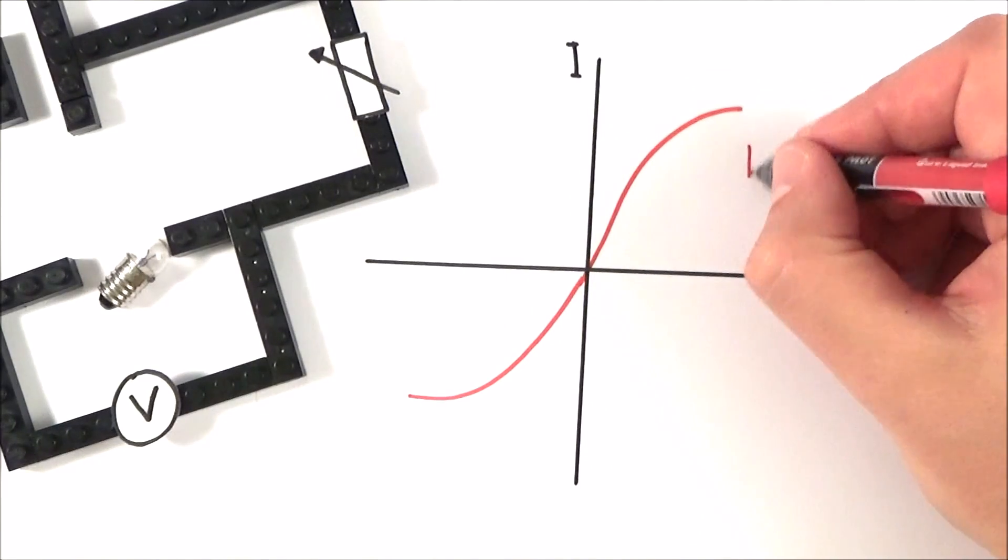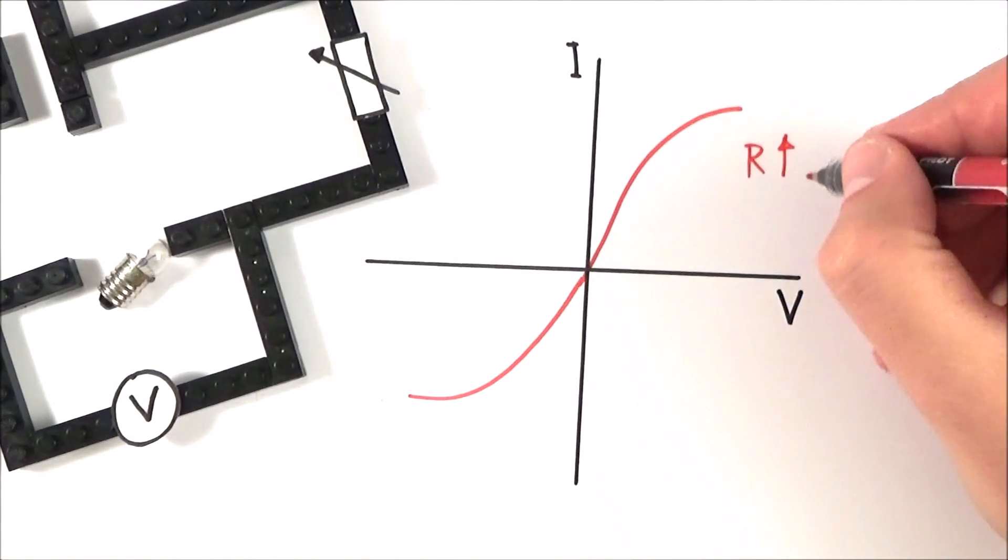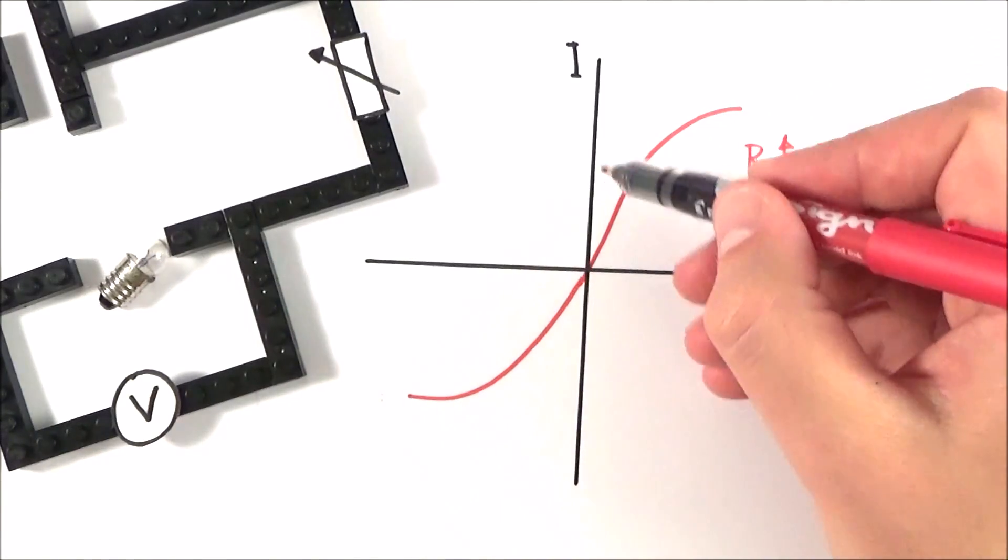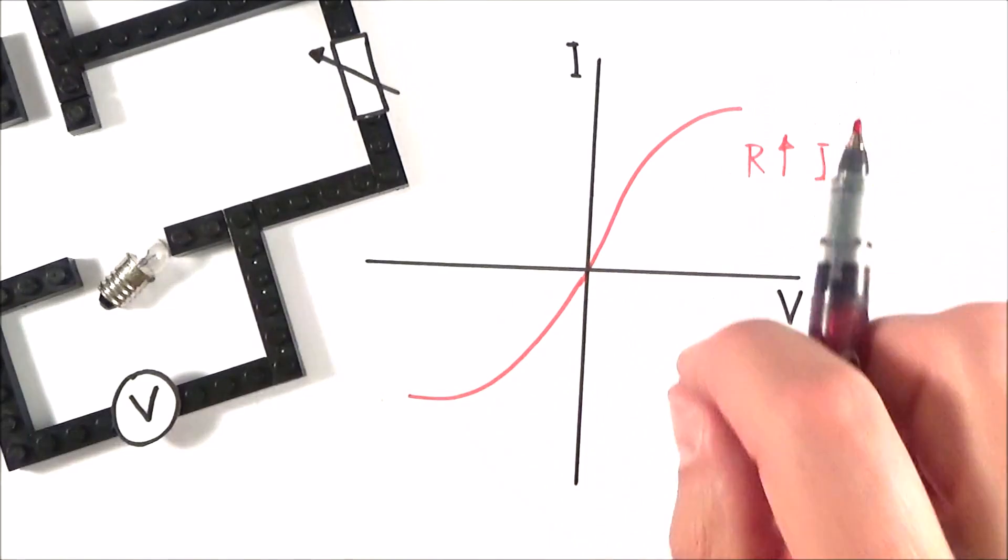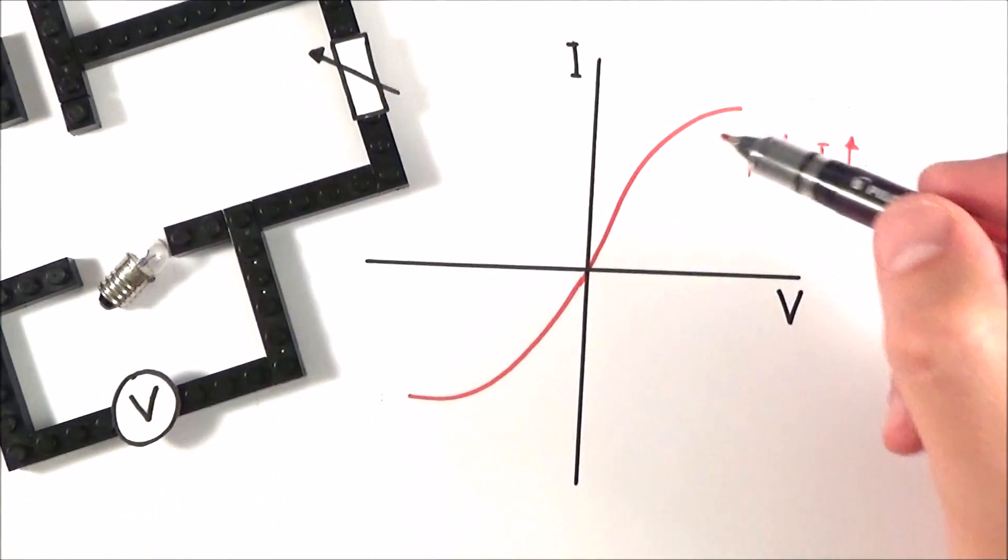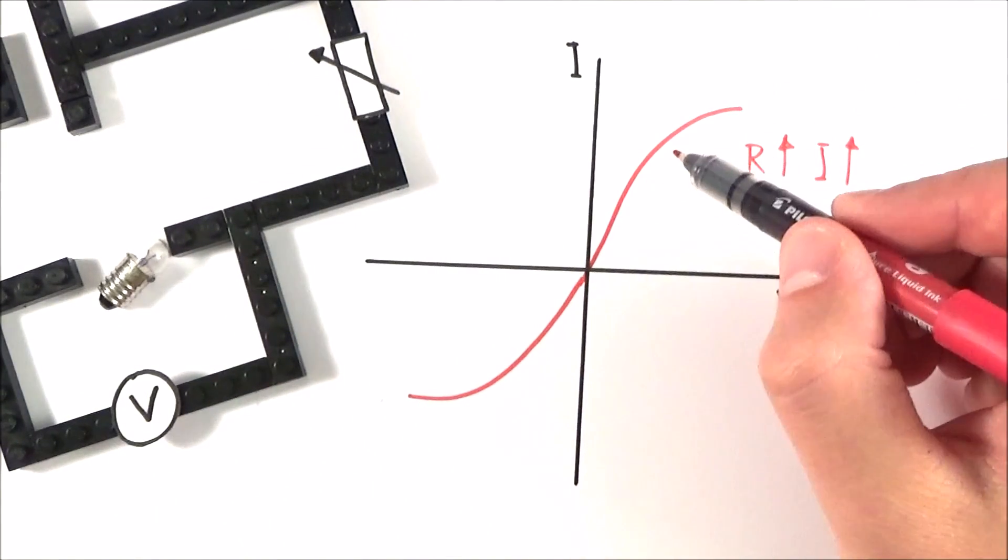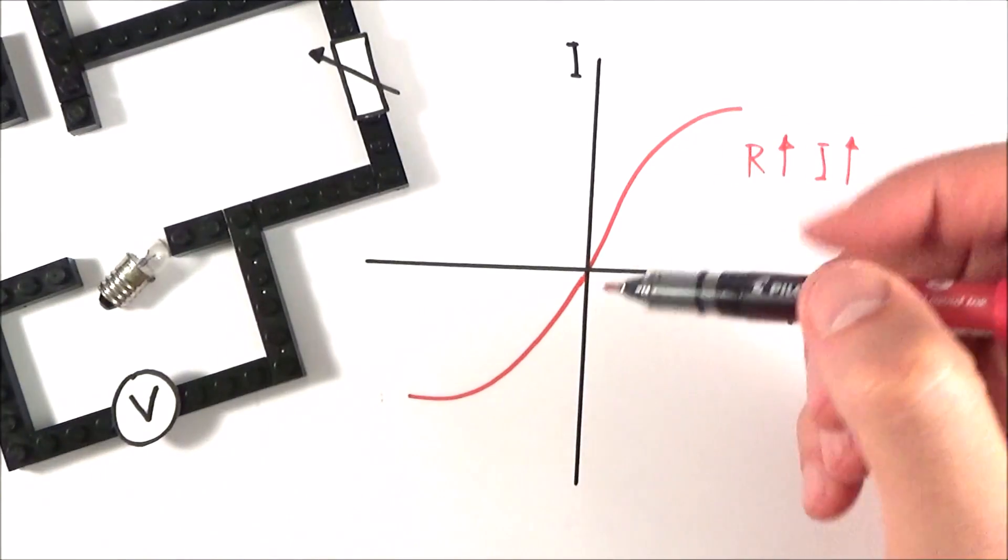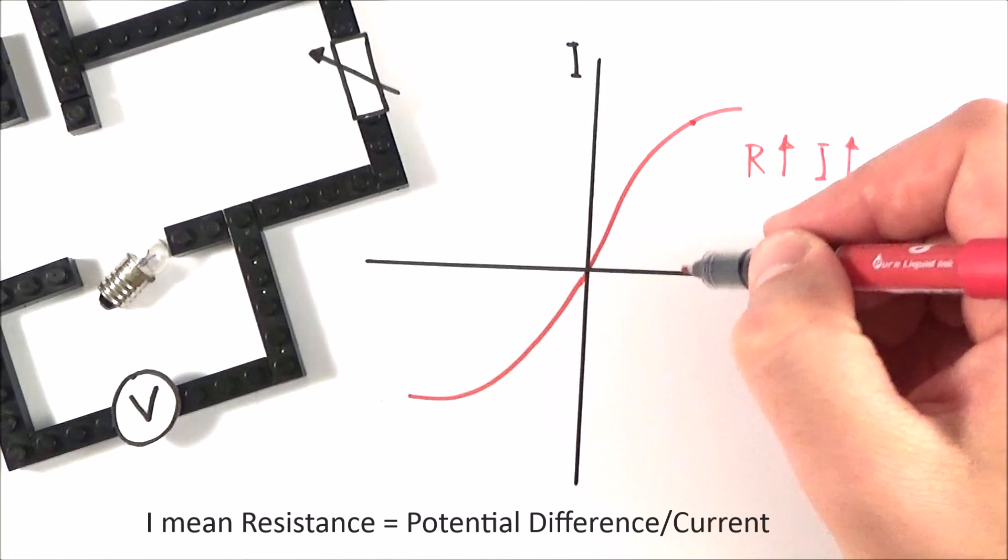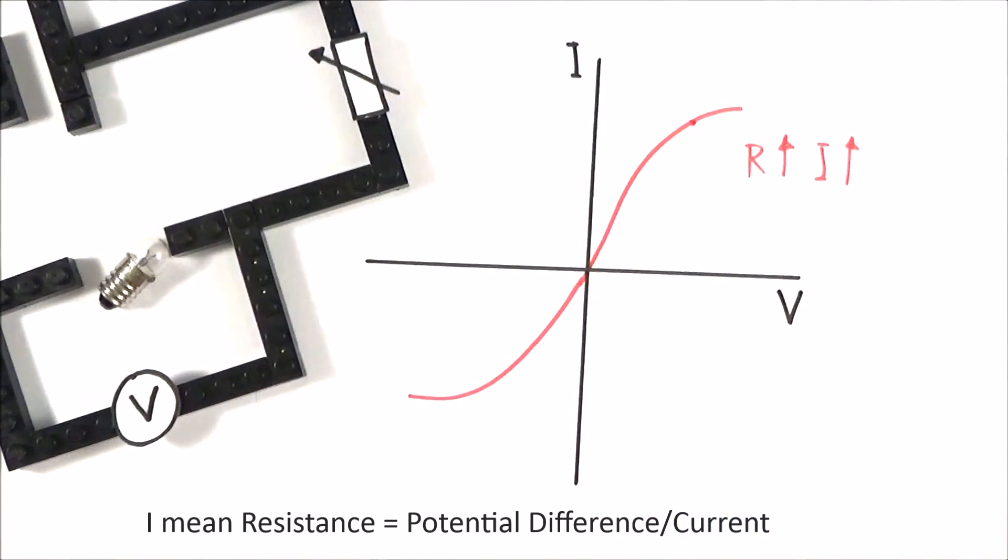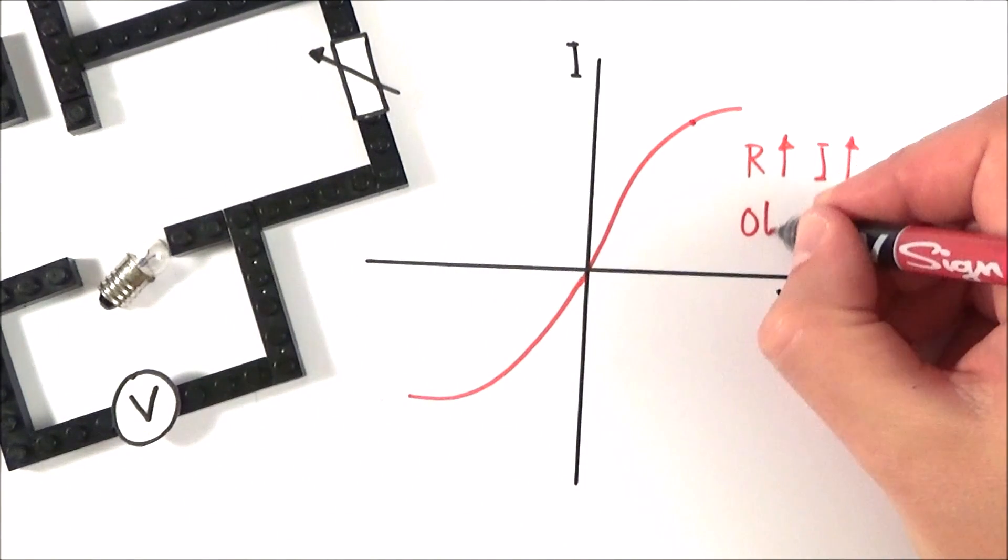So there's a few things to note about this. First of all it behaves the same whichever way the current is flowing. Also the resistance increases as the current increases. So the higher the current we have, the greater the resistance, which tends to mean that the graph kind of flattens off. Now it's important to note that the resistance is not equal to the gradient of the line. The resistance at any point is equal to the value of I divided by the value of V, and it's not the gradient.